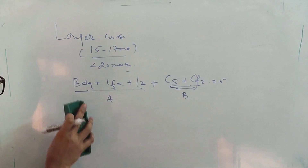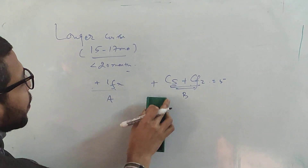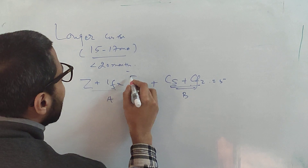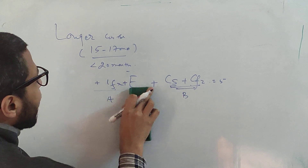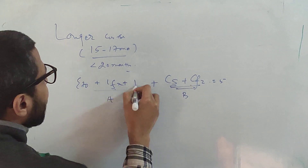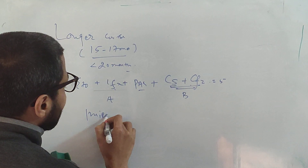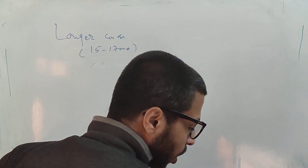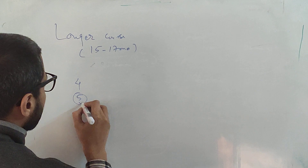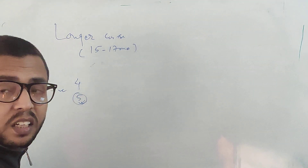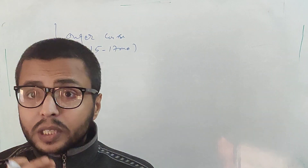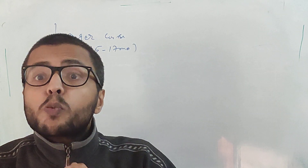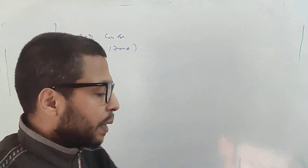If a patient has resistance to, for example, bedaquiline and linezolid, you only have 3 Group A/B drugs, so you add drugs from Group C — such as ethambutol, ethionamide, prothionamide, para-aminosalicylic acid, or imipenem-cilastatin — depending on sensitivity results. The benefit of the longer course regimen is that you can tweak drugs based on the side effect profile and resistance pattern, but the disadvantage is the longer duration of 15 to 17 months.